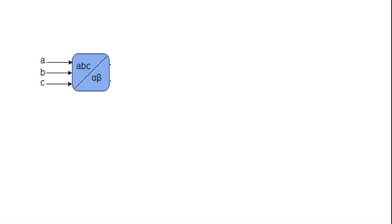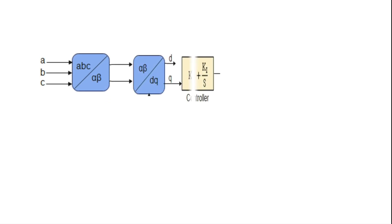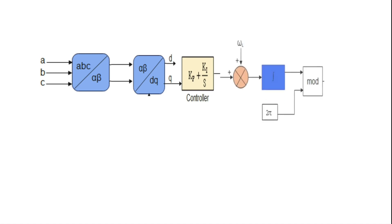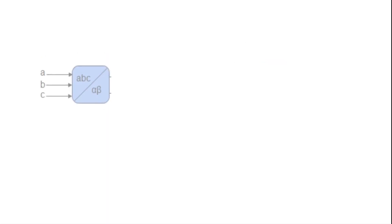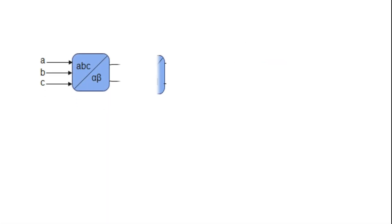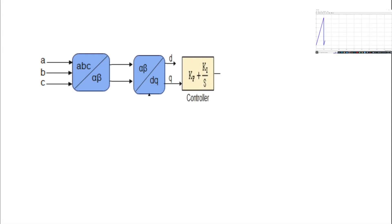The phase voltages are transformed from the DQ synchronous reference frame. The D component is the magnitude of the real value and the Q component is the error. The error is fed to the PI controller, whose output is applied to an integrator to obtain the phase angle theta.